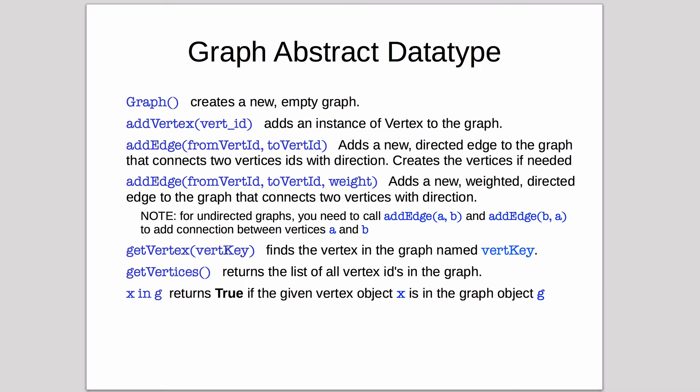Then there's getVertex, where you give it a key and it returns the vertex object. There's getVertices, which returns a list of all the vertex IDs (not the objects themselves) from the graph. Then there's the 'in' operator - if you have a vertex object X, you can check if it's in the graph object G that you created.